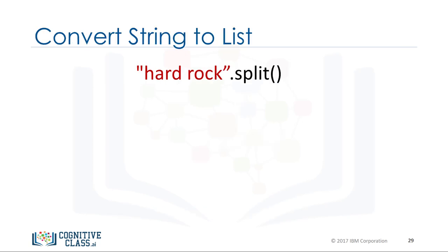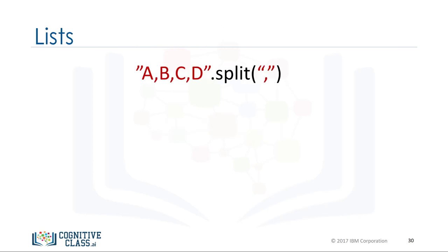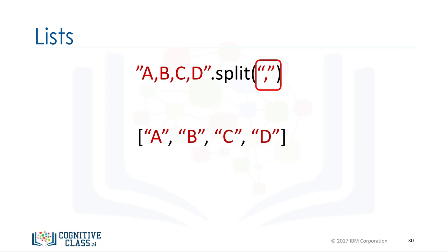We can convert a string to a list using split. The method split converts every group of characters separated by a space into an element of a list. We can use the split function to separate strings on a specific character known as a delimiter. We simply pass the delimiter we would like to split on as an argument — in this case, a comma — and each element corresponds to a set of characters separated by that delimiter.